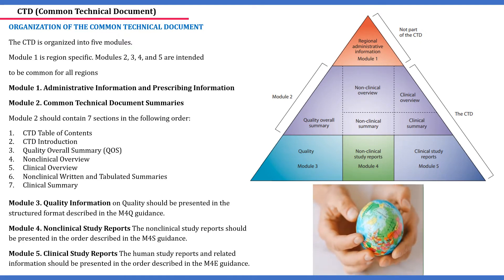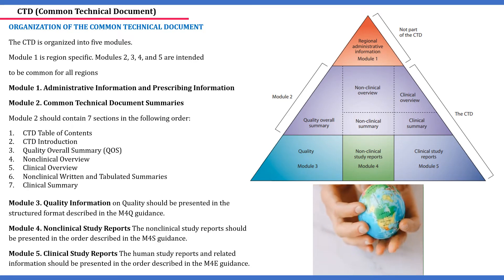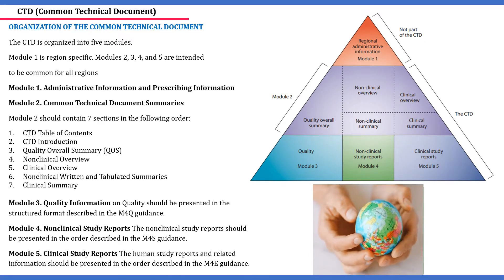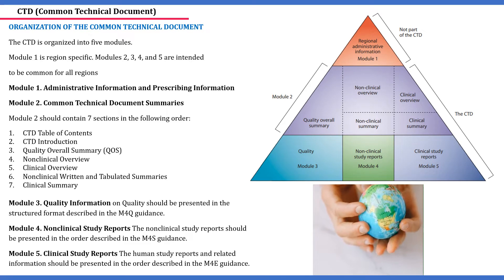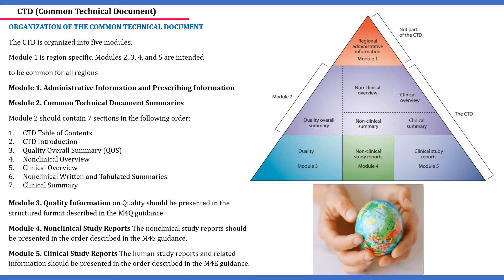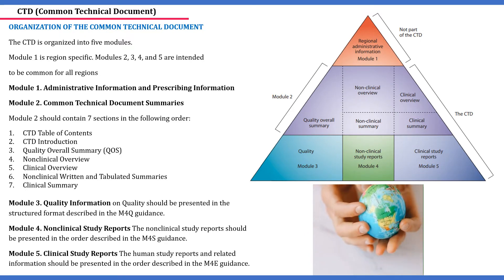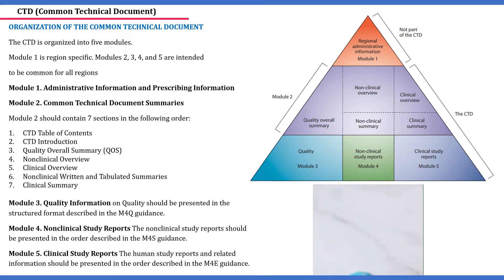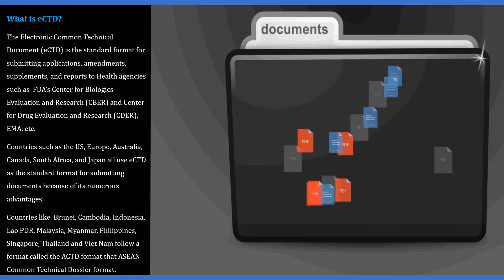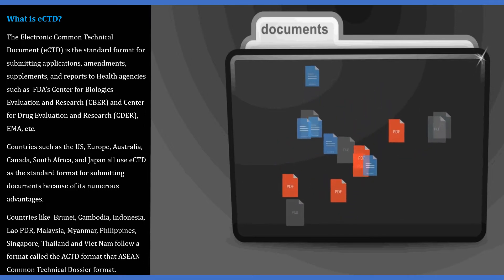Module 2 is the common technical document summaries, containing summarized information of modules 3, 4, and 5, subclassified into 7 sections further structured per the CTD format. Module 3 is the quality information, containing A to Z information from the drug starting material to the final drug product. Module 4 is the non-clinical study report, containing information on in vivo or in vitro experiments studied under lab conditions to determine safety. Module 5 is the clinical study reports, providing clinical statistical information, presentations, and analysis of completed studies. The eCTD is the standard format for submitting applications, amendments, supplements, and reports to regulatory health agencies like the USFDA, Health Canada, and EMA.